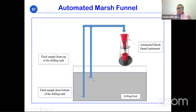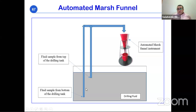The automated marsh funnel setup also provides early indication of barite sagging — a major issue in high-pressure, high-temperature wells where the weighting material settles out. By sampling from the top, middle, and bottom of the mud tank and comparing density and marsh funnel readings, deviations indicate solid particle settling, alerting engineers to potential problems. The application of artificial intelligence and machine learning in drilling operations is becoming increasingly important given the huge volumes of real-time data being generated.